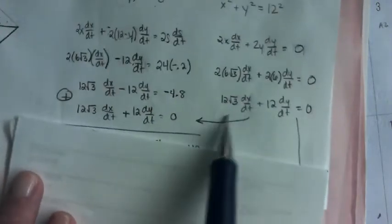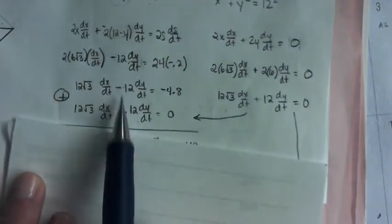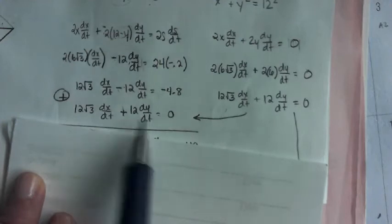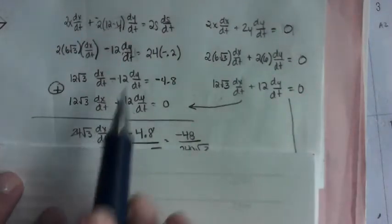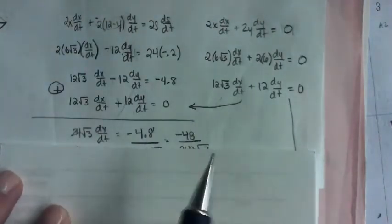So I took this one, lined it up underneath this one. I did opposite signs on the 12 DY DT's. So I added, and I got 24 root 3 DX DT's. These eliminated equaled negative 4.8.